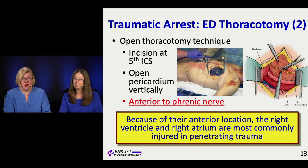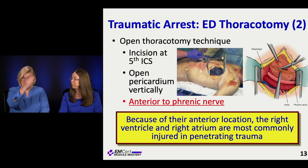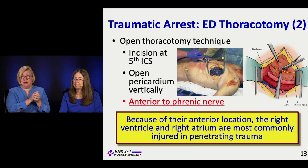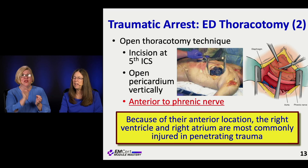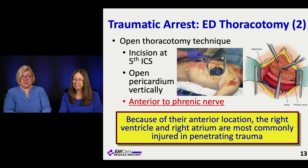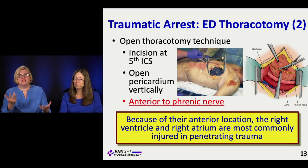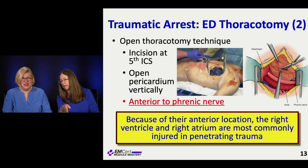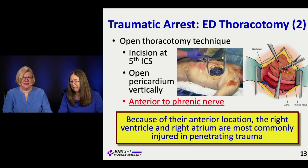If you're going to do an ED thoracotomy, remember: you make an incision at the fifth intercostal space. You're trying to get to the pericardium to open it and drain the blood. You go with scissors anterior to the phrenic nerve, which is really obvious when you look in there. Because what lies anteriorly is the right side of the heart — the right ventricle and right atrium — that is the most commonly injured area. They could ask you that: what is the most common injury pattern in a penetrating chest wound?